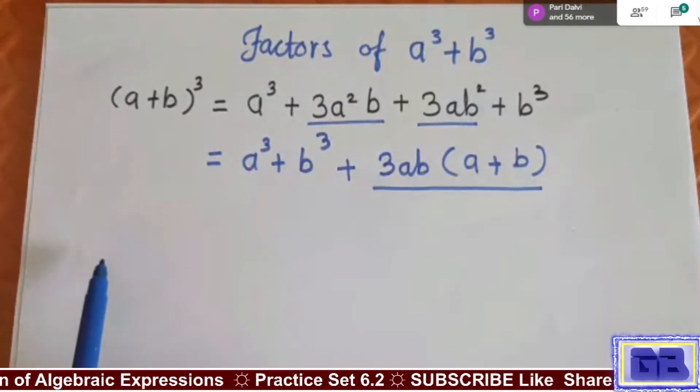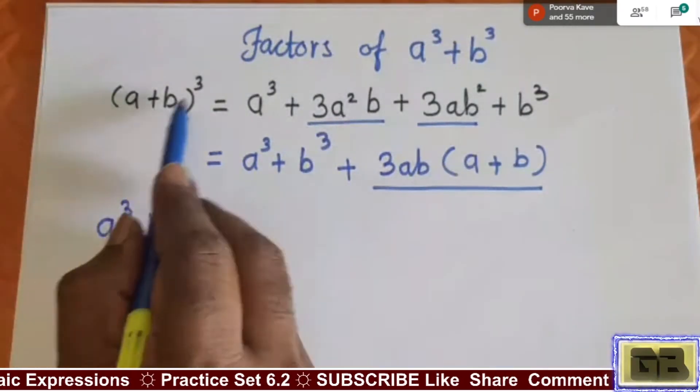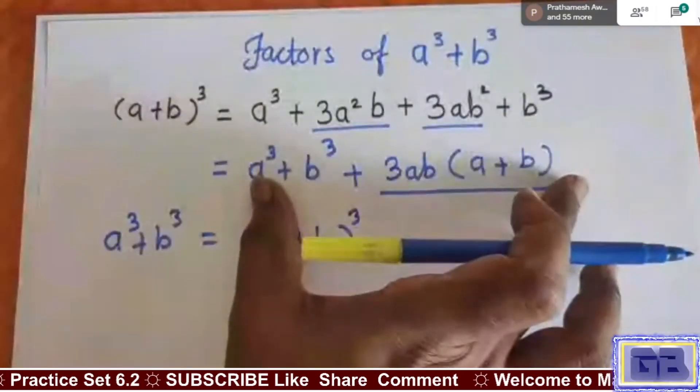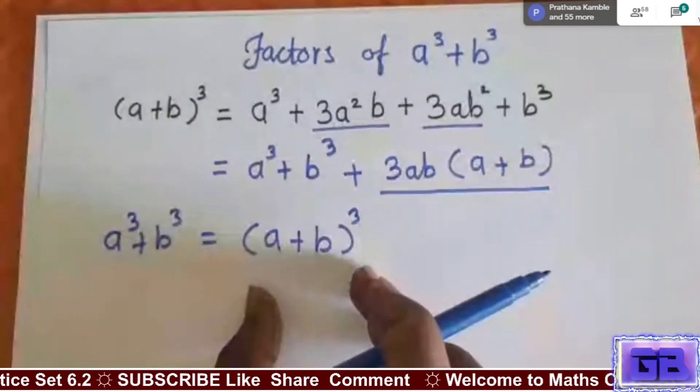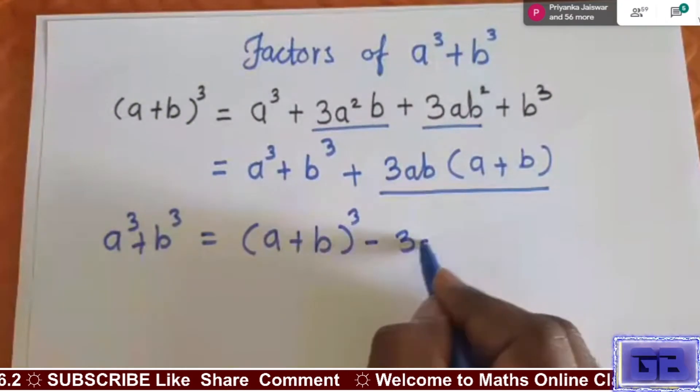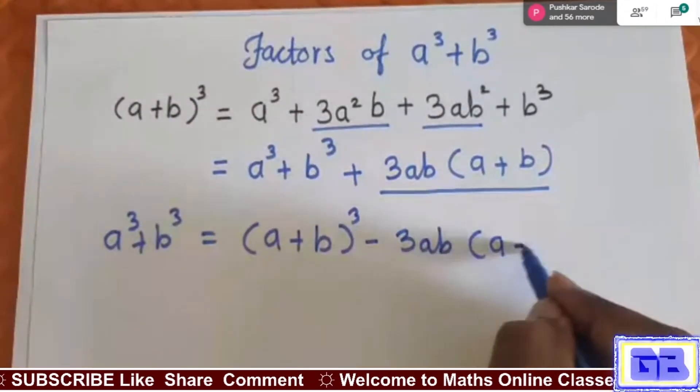And this (a+b)³ to this side. If we consider this full term we have taken to the left side and this is on the right side. From here to here if we are shifting, here it becomes minus 3ab in bracket (a+b).